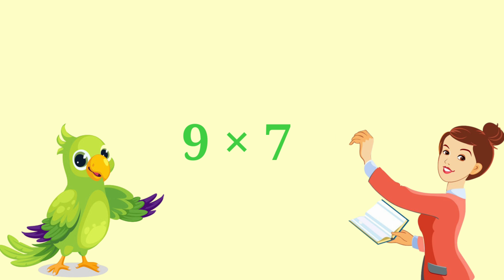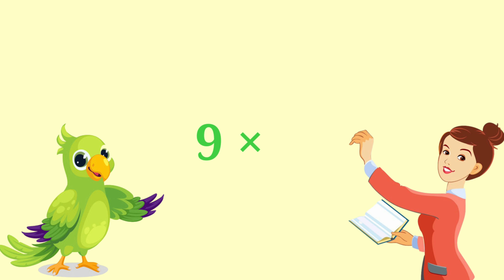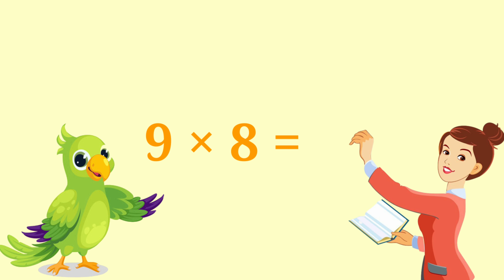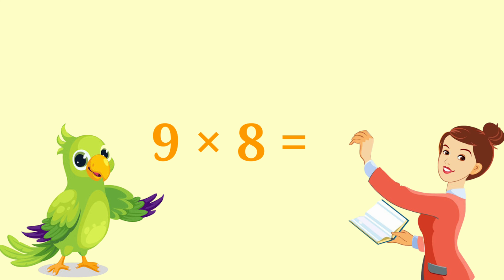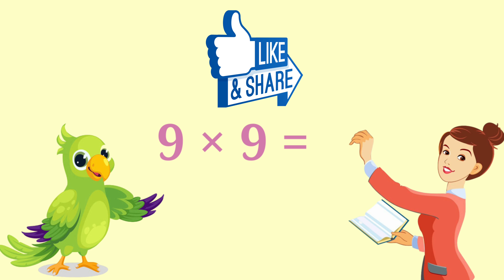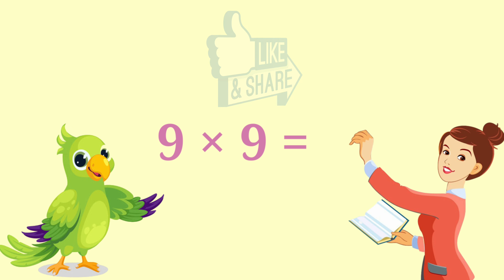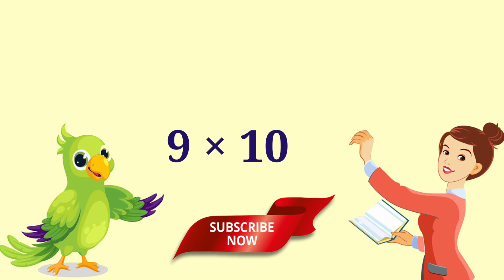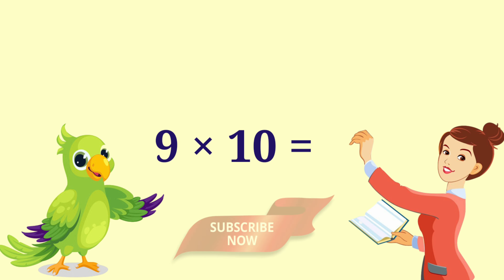9 sevens are 63. 9 eights are 72. 9 nines are 81. 9 tens are 90.